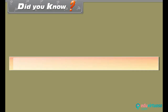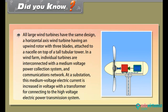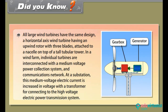Did you know? All large wind turbines have the same design — a horizontal axis wind turbine with an upwind rotor with three blades attached to a nacelle on top of a tall tubular tower. In a wind farm, individual turbines are interconnected with a medium voltage power collection system and communications network. At a substation, this medium voltage electric current is increased in voltage with a transformer for connecting to the high voltage electric power transmission system.